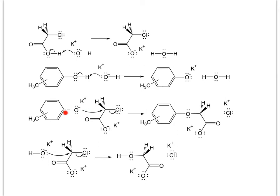Now that we've created our phenoxide ion, it can act as a nucleophile and attack the primary position on the chloroacetic acid where the chloride ion is — that is a primary position susceptible to SN2 attack. We get inversion of configuration, but since there are two hydrogens on that carbon, that doesn't matter. The SN2 reaction will make the carboxylate salt of our ether product.